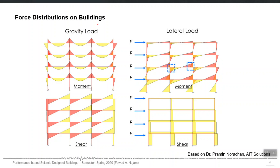If I make a bending moment diagram of a typical frame, the bending moment will be maximum either at the ends or at mid-span. The same is true for shear force — it will be maximum at the ends. But for beams and columns under lateral loading, the bending moment diagram will be maximum at both ends. The shear force will be constant throughout the height of the column if loading is applied only at story levels; if applied between story levels, there will be a jump in the shear force diagram.